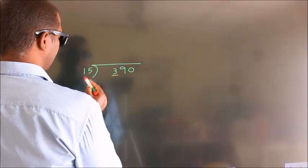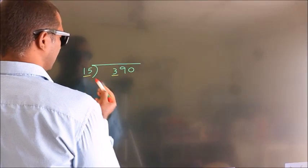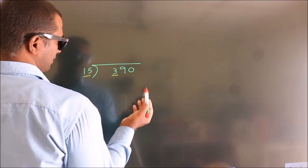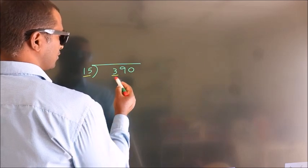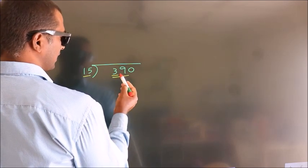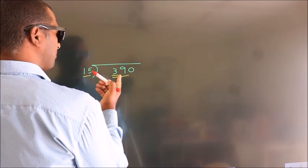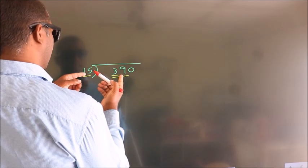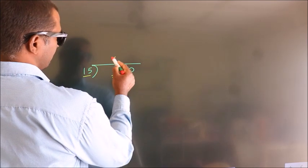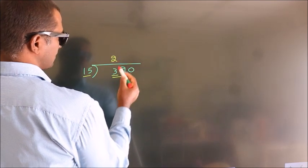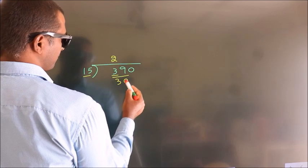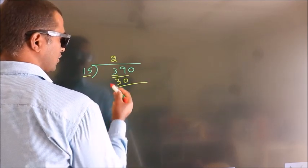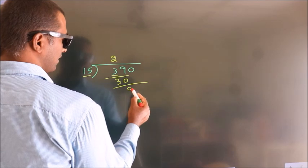Here we have 3, and here 15. Since 3 is smaller than 15, we take two numbers: 39. A number close to 39 in the 15 times table is 15 times 2, which is 30. Now we subtract, and we get 9.